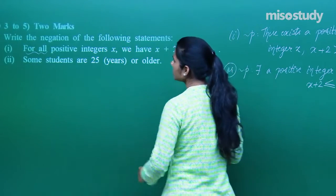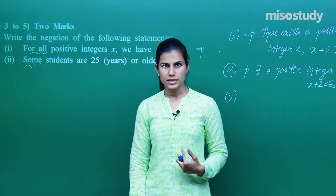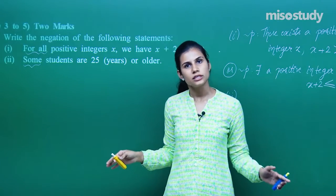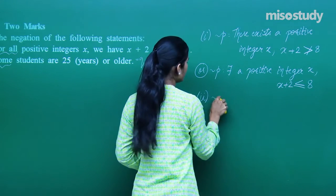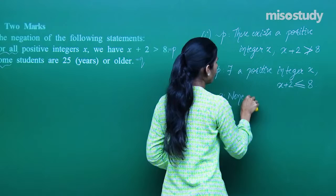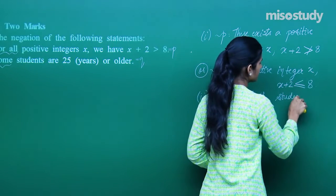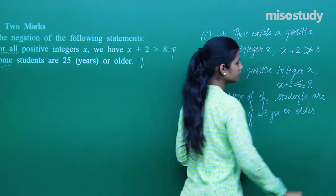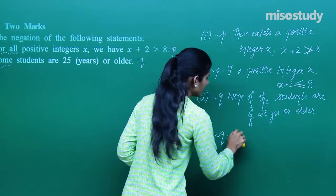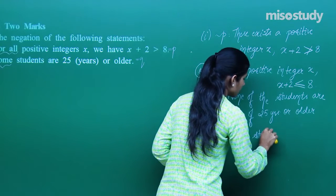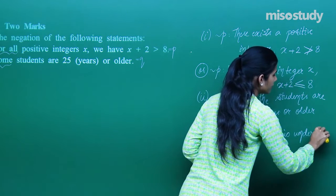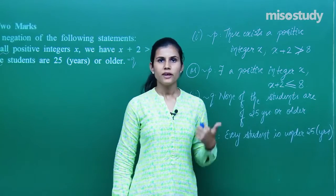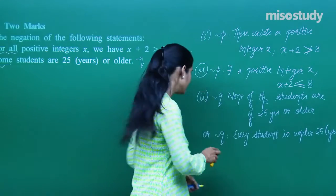The second statement is 'some students are 25 years or older.' The negation of 'some' is 'none.' Even if there is one student who is 25 or older, its negation is: none of the students are 25 years or older. Alternatively, you can write: every student is under 25 years of age. These are alternative ways of writing the negation of the same statement.